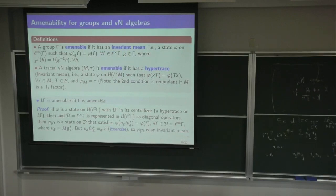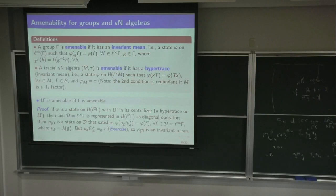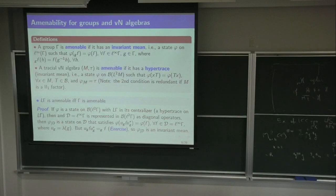That condition is redundant if M is a factor, because there you have a unique trace. And of course Φ, having this centrality property for T in M as well, is a trace when restricted to M. One has this observation: L(Γ) is amenable as a von Neumann algebra if and only if Γ is amenable as a group.